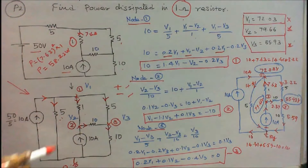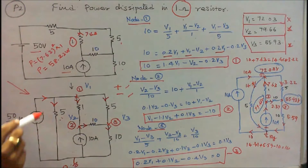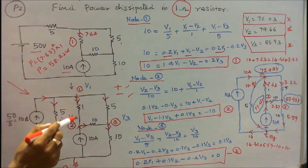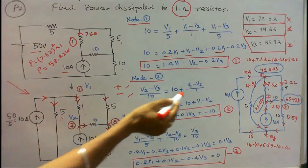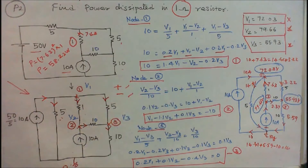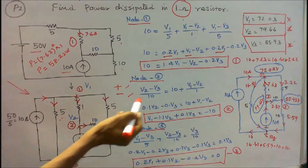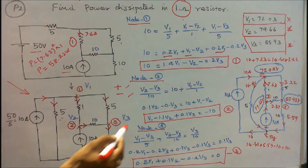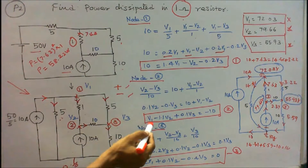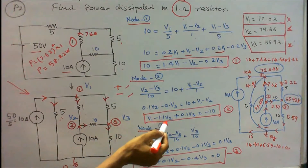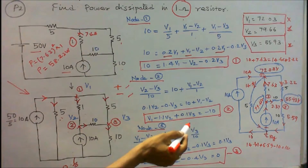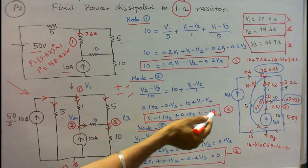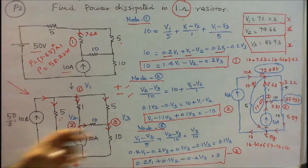Now I consider node 2. The equation is: 10 + (V1 - V2)/1 = (V2 - V3)/10. Simplifying: V1 - 1.1·V2 + 0.1·V3 = -10. That is equation 2.